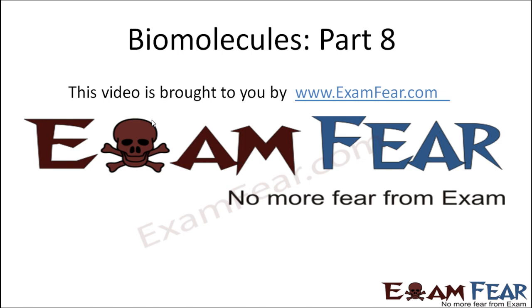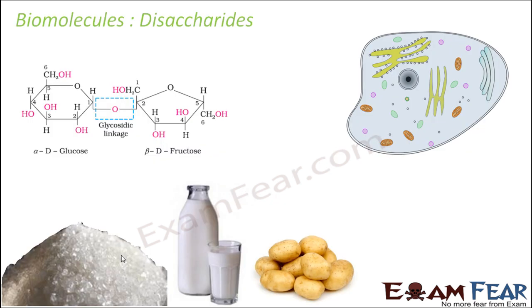Hello friends. With this we will end our discussion on monosaccharides. In monosaccharides, we saw that they are the simplest sugars which cannot be further hydrolyzed. We discussed mainly two monosaccharides — glucose and fructose — covering their open structures, cyclic structures, and how they can be prepared.